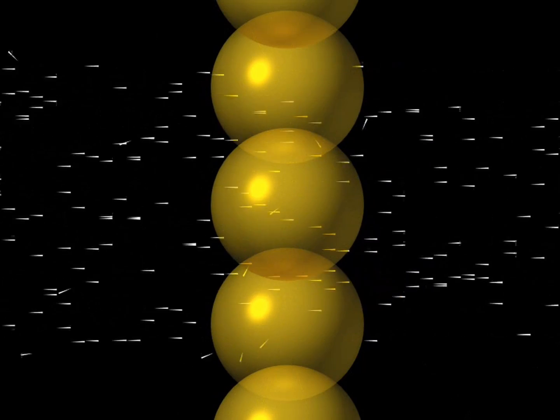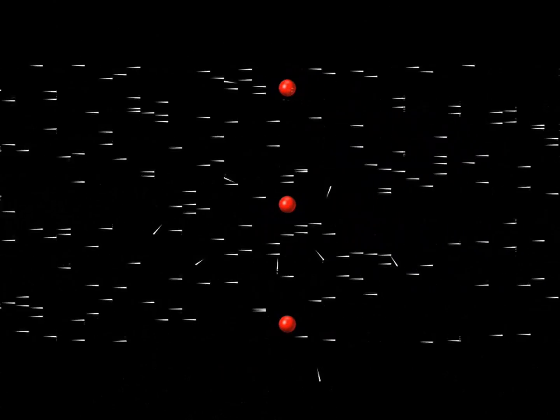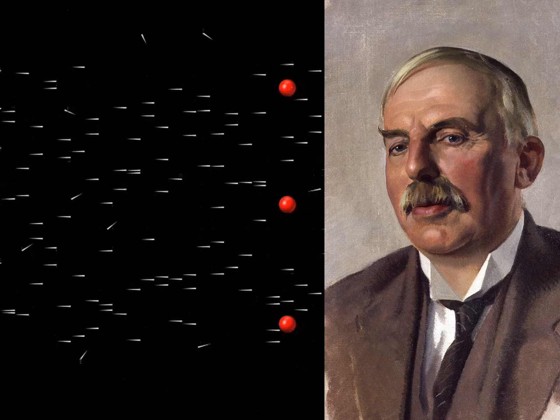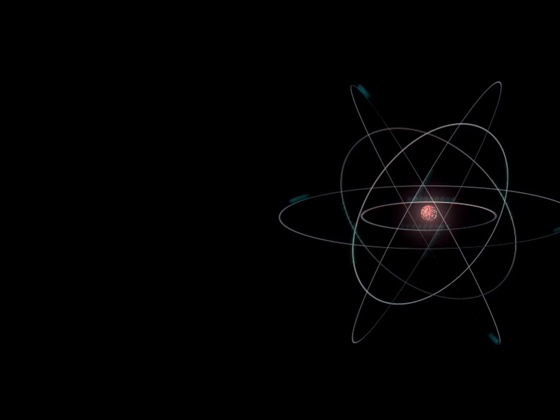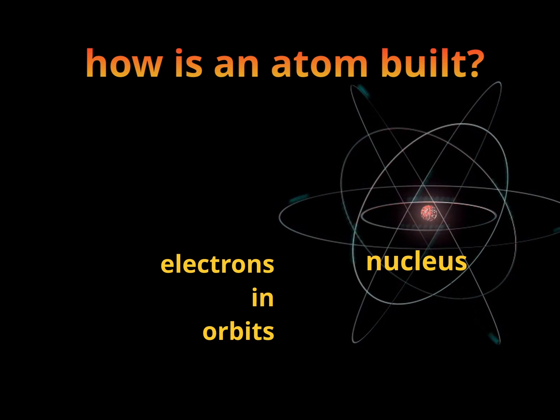Rutherford concluded that there is no cake. Instead, there is something tiny but very massive — something that lies at the center of the atom. The something he called a nucleus. And so he conceived a new image of the atom called the Rutherford model. Today we know that the atom consists of a central nucleus with the electrons orbiting around it.